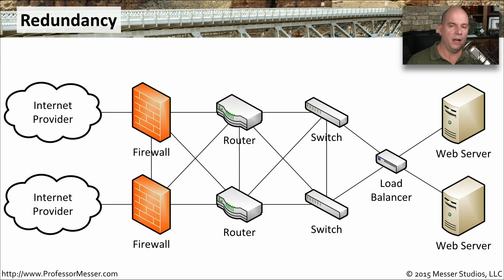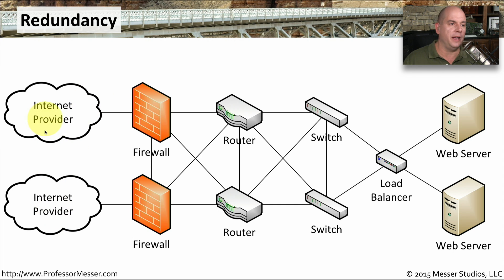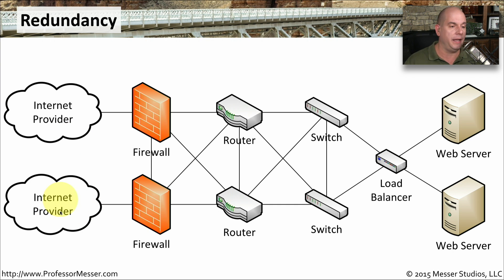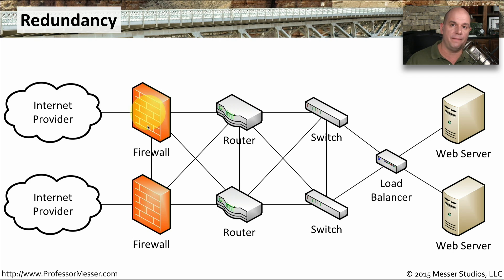This is a very common network design for a redundant network and redundant components. In this case, we even have multiple internet providers — that way, if one internet provider has a problem, we can still send and receive information using the other link. Most networks will have multiple firewalls in place, either running both at the same time or with a failover process to move from one firewall to the other automatically.